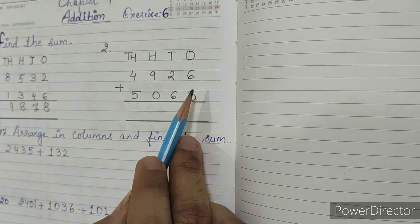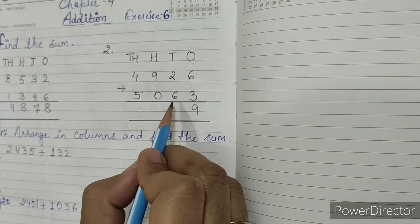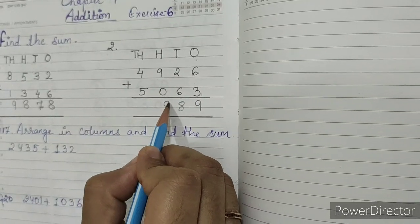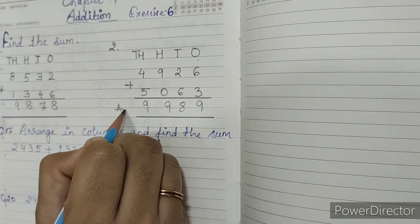So we have to add the numbers again. 6 plus 3 is 9. 2 plus 6 is 8. 9 plus 0 is 9. 4 plus 5 is 9. So this is our answer.